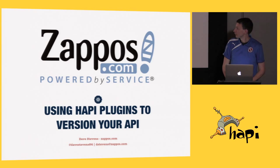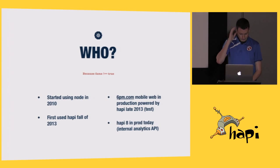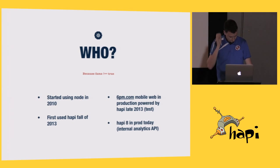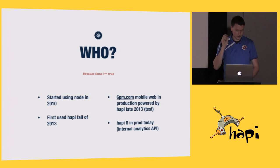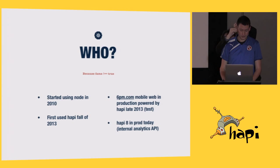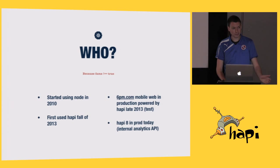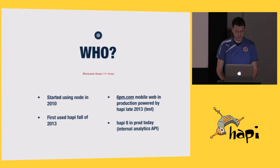I just wanted to talk to you about using Hapi plugins to version your API. I started using Node back in 2010, and first used Hapi at the end of last year on a personal recommendation of a friend. We actually managed to get something into customer-facing production at the end of last year — an A-B test for 6pm.com, the mobile views, which is our sister site. And we have Hapi 8 in production today on an internal analytics API. Not quite Black Friday at Walmart, but we're doing our best.